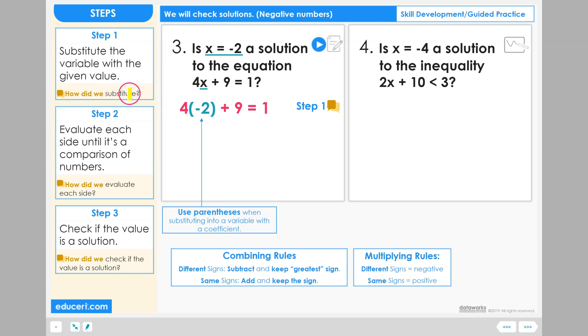How did we substitute? In step 1, we took the value negative 2 and replaced the variable with negative 2 using the parentheses because we were substituting into a variable that had a coefficient of positive 4.